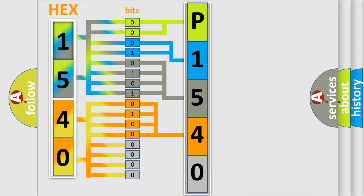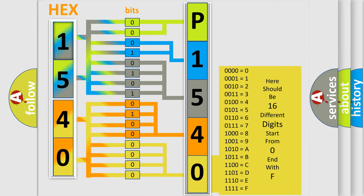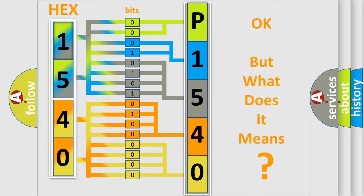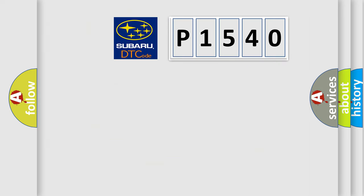A single byte conceals 256 possible combinations. We now know in what way the diagnostic tool translates the received information into a more comprehensible format. The number itself does not make sense to us if we cannot assign information about what it actually expresses. So, what does the diagnostic trouble code P1540 interpret specifically for Subaru car manufacturers?